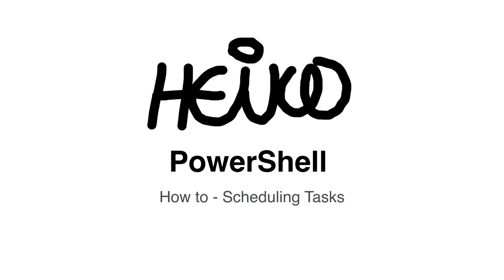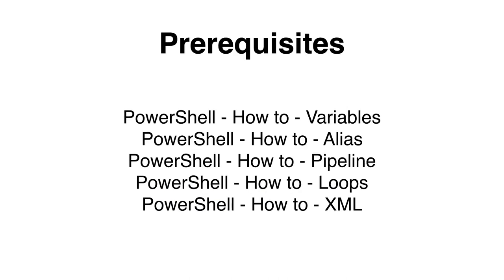Welcome! In this session I would like to explain to you how to schedule tasks using Windows PowerShell. Scheduling tasks is an elegant way to automate processes. Before I start, I need to make sure that you have a full understanding of variables, aliases, loops, XML, and how to use the pipeline. If you are unsure or would like to refresh your memory, please view one of my earliest sessions.